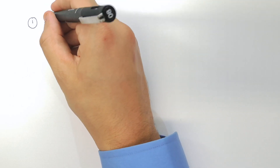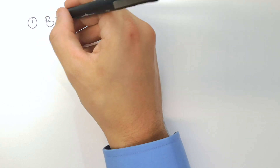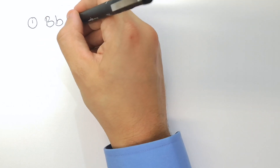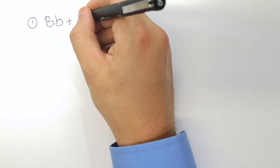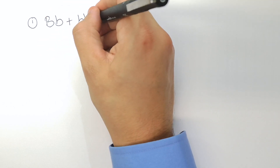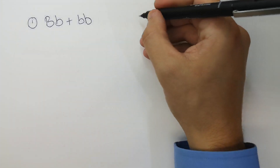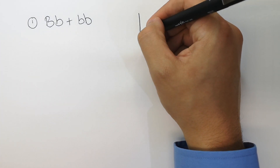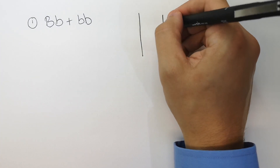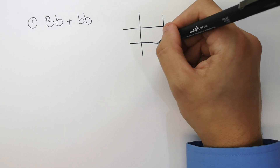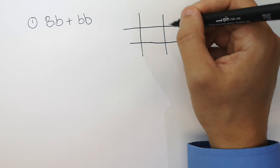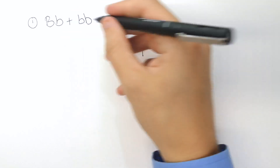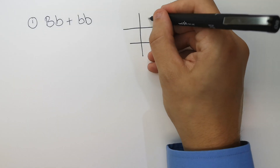We're now going to use a Punnett square to cross a mum which has got big B, little b — so they're going to have brown eyes — and a dad who's got little b, little b: blue eyes. Now we draw the Punnett square, and then you transfer the potential gametes into it.